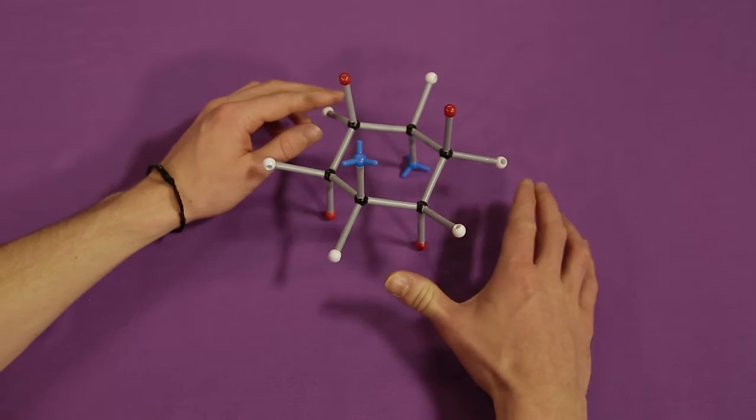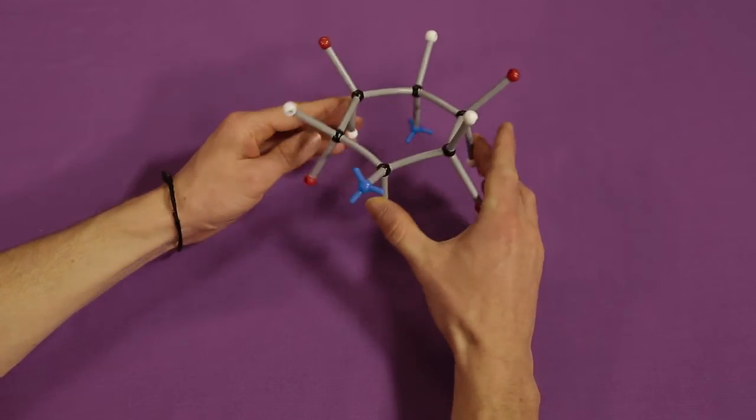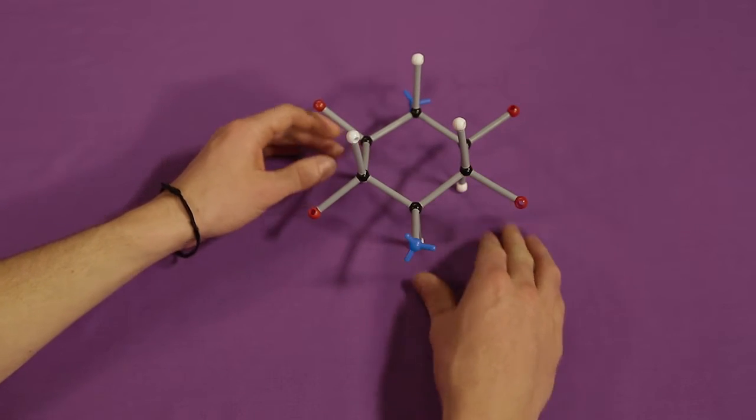Flipping the ring gives you the same isomer, just as when you flip a quarter, it remains a quarter.